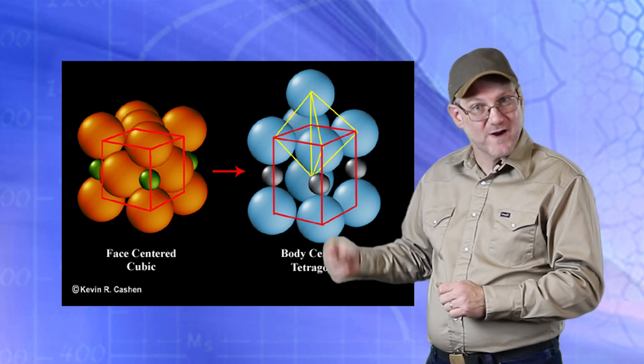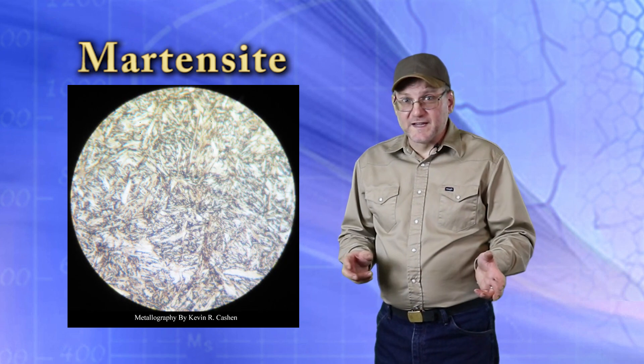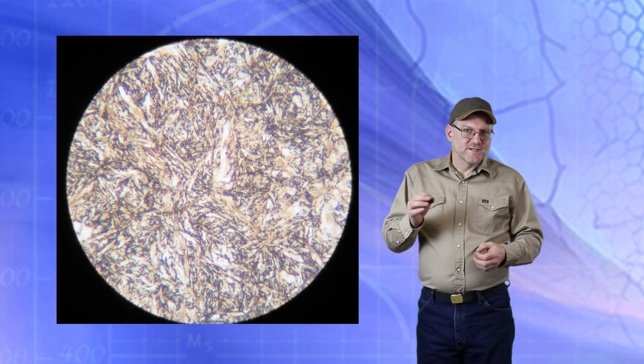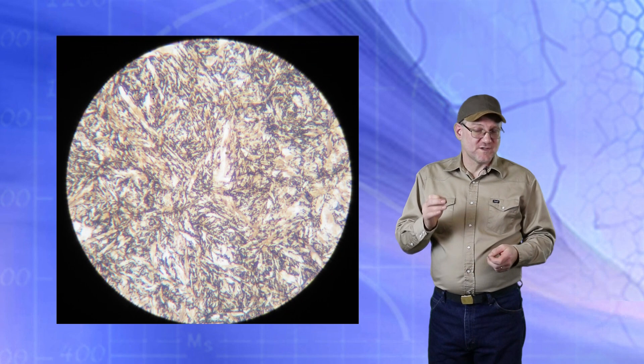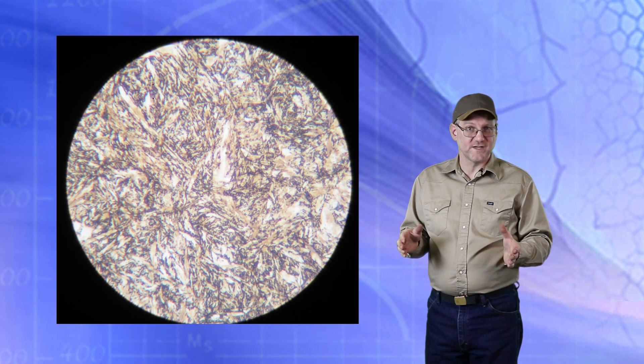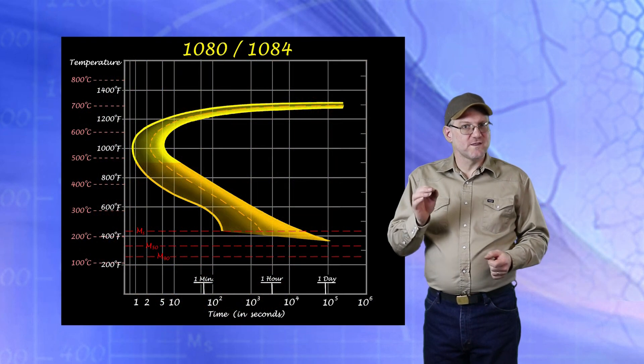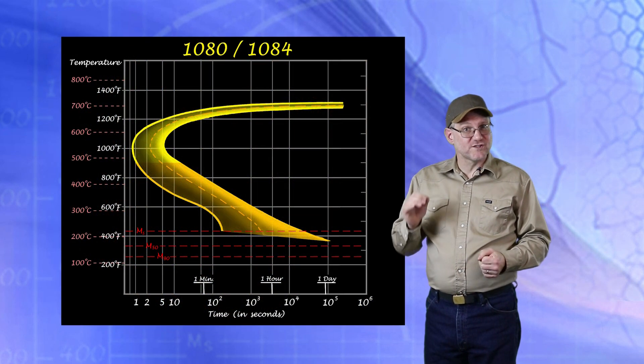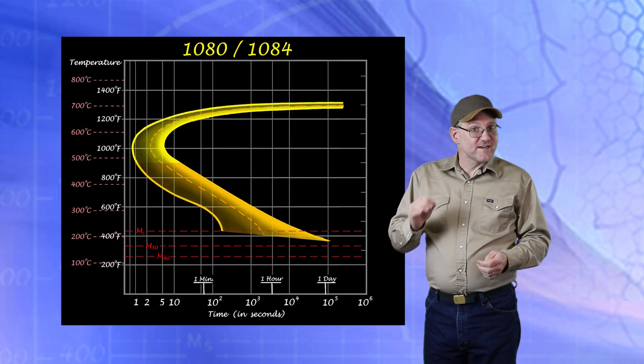Since carbon atoms do not diffuse to make martensite, time no longer holds control over the transformation. Only the rate of cooling driving the strain matters, and that is why the martensite zone is a flat line across the diagram with degrees of martensite formed as it cools.